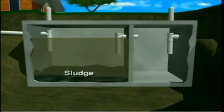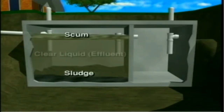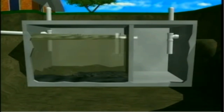Once in the tank, the wastewater separates into three layers. The heavier solid matter, or sludge, sinks to the bottom. The middle layer consists of liquid effluent, while the lighter solids known as scum float to the surface. The sludge at the bottom is partially decomposed by anaerobic bacteria that thrive in these oxygen-free conditions. The liquid effluent then flows from the septic tank into the dosing chamber, aided by gravity.